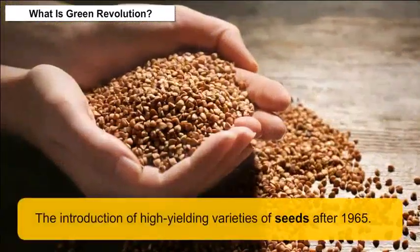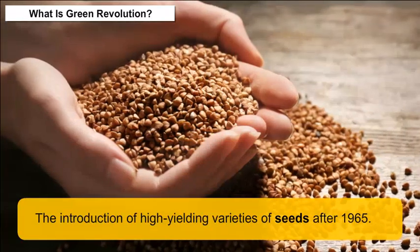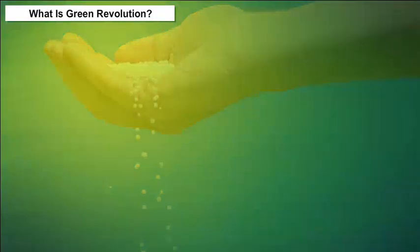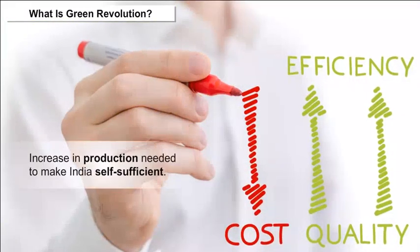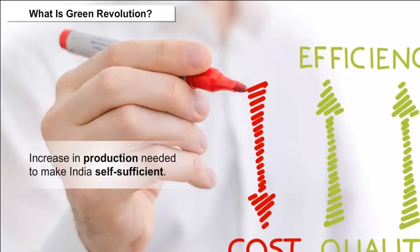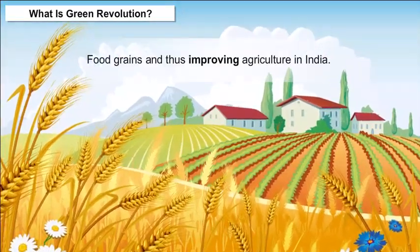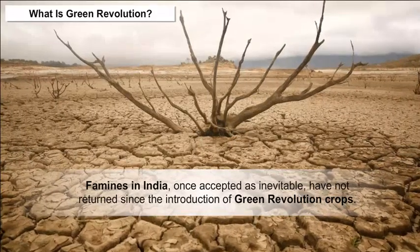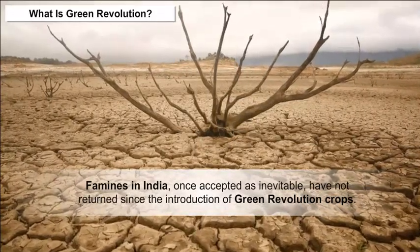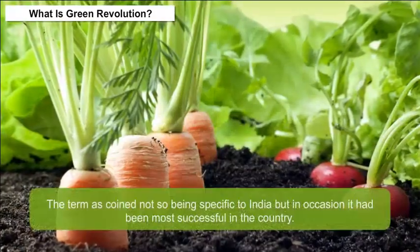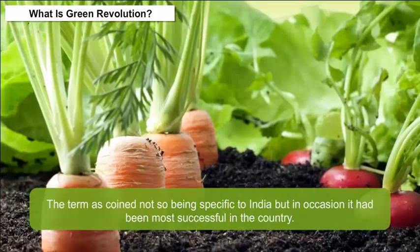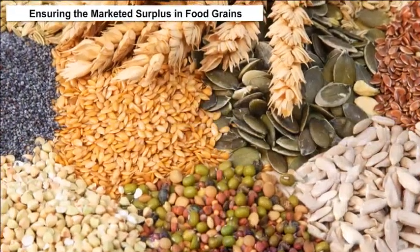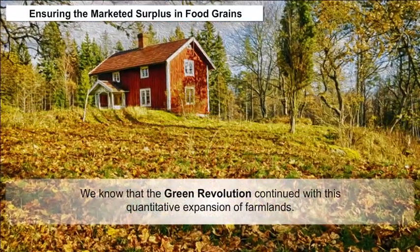The introduction of high-yielding varieties of seeds after 1965, along with increased use of fertilizers and irrigation, are collectively known as the Green Revolution, which provided the increase in production needed to make India self-sufficient in food grains and thus improve agriculture. Famines in India, once accepted as inevitable, have not returned since the introduction of Green Revolution crops. The term was coined not specifically for India, but it has been most successful in the country.